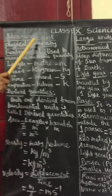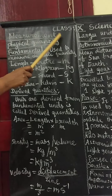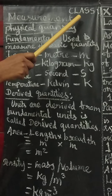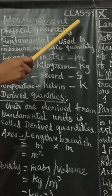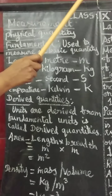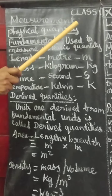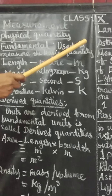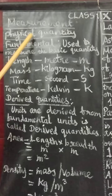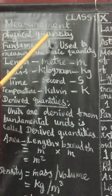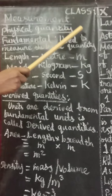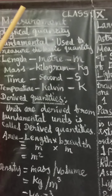In the measurement lesson, you have to study about what is the measuring system, and what is called a unit, and what are the different types of units — larger units and smaller units. So, physical quantity is a measurement that has a numerical value under a unit system.